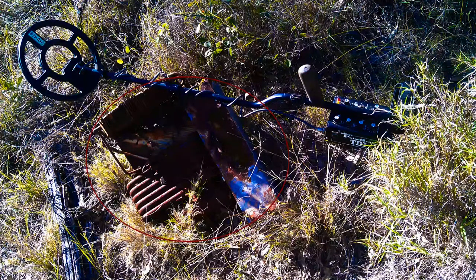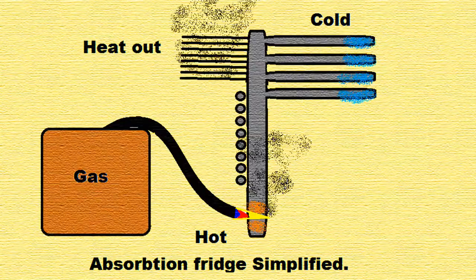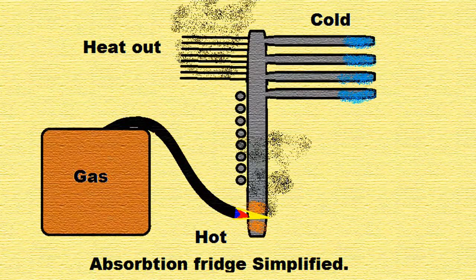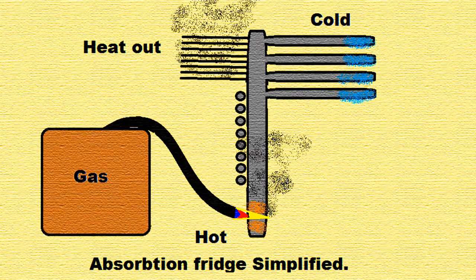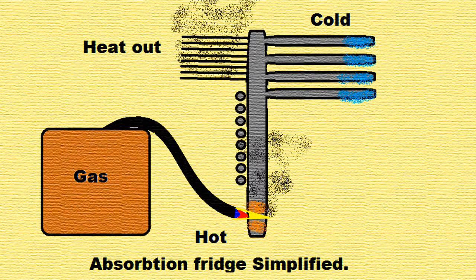Before the modern refrigerator, there was what they call the absorption fridge, which used ammonia inside mild steel tubes to remove heat from one section and disperse the heat from another.